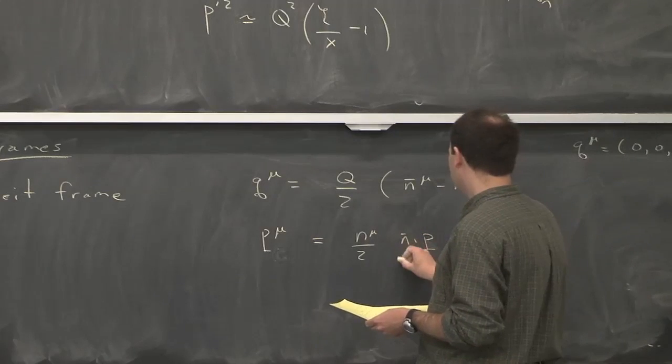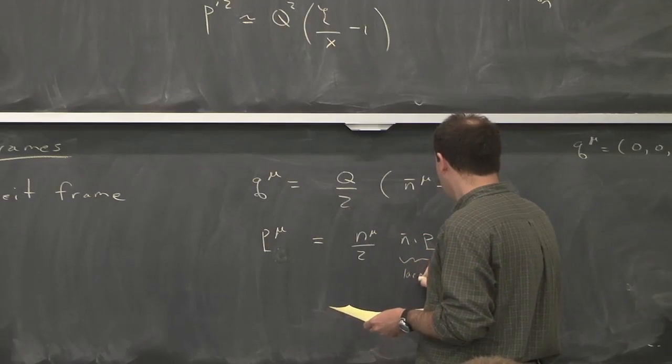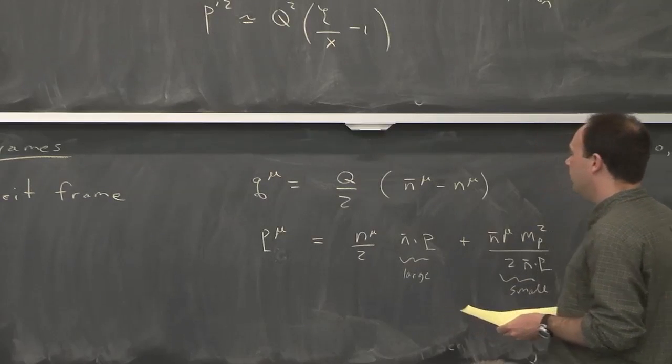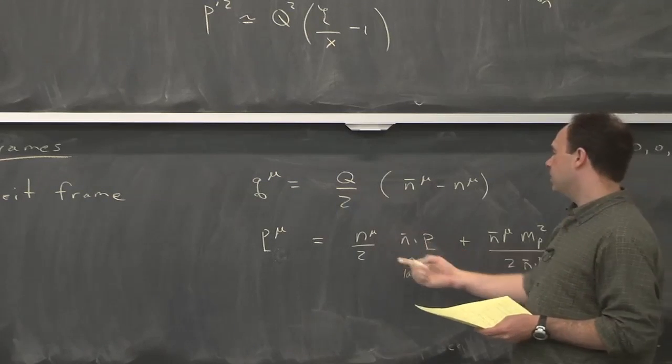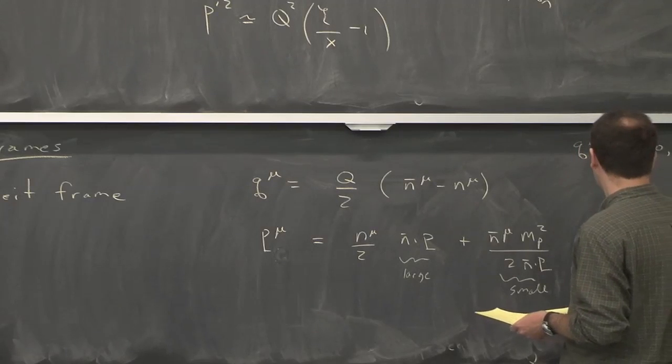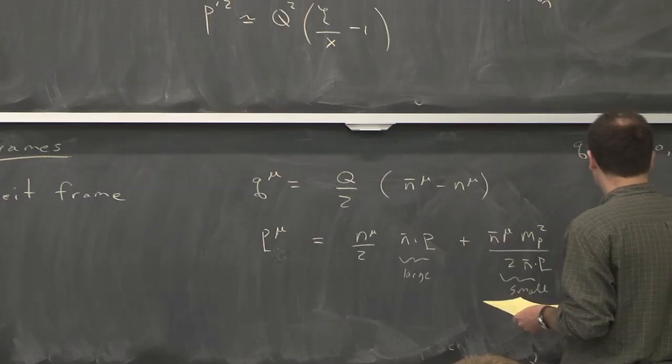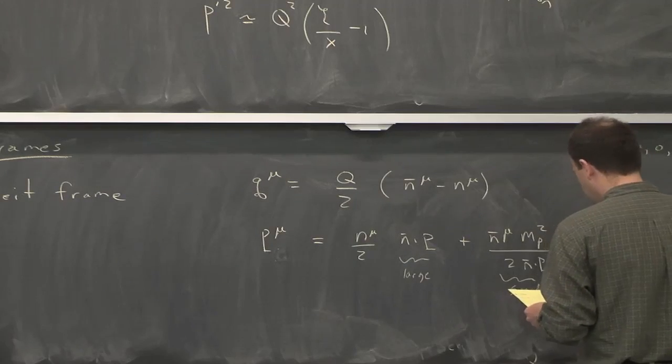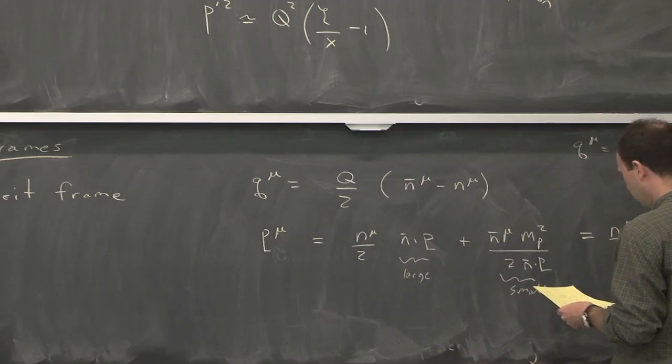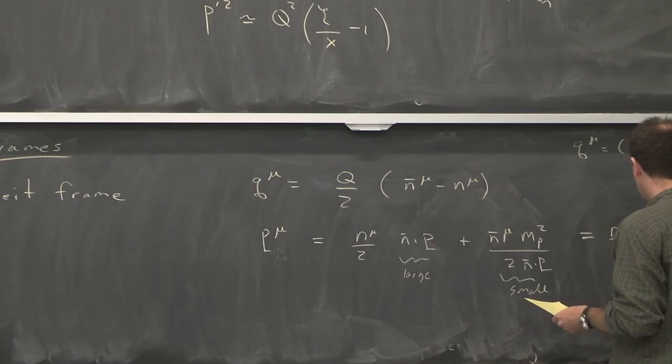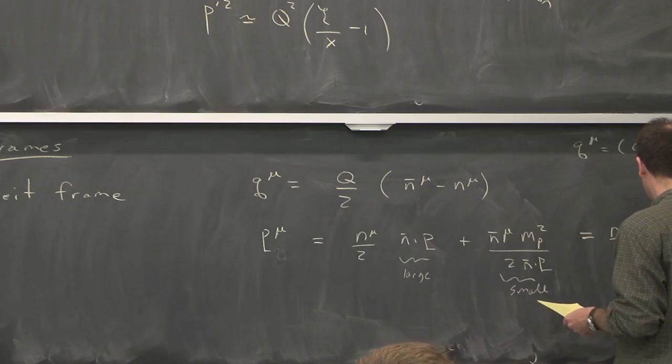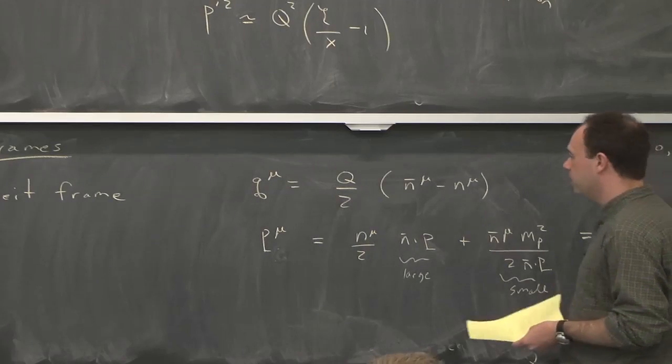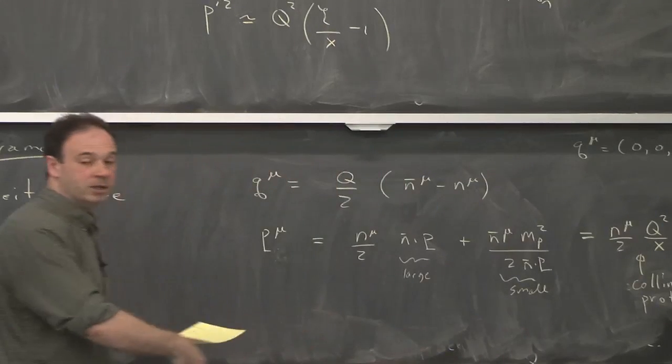So it's got a large. This is large, and this is small. And if you have a large component in some light-like direction, that means it's collinear. So you could actually write it as using momentum conservation. You could write it like this. And it has a kind of collinear scaling. So what we have in the deep inelastic scattering in the Breit frame is that the incoming proton is a collinear proton.